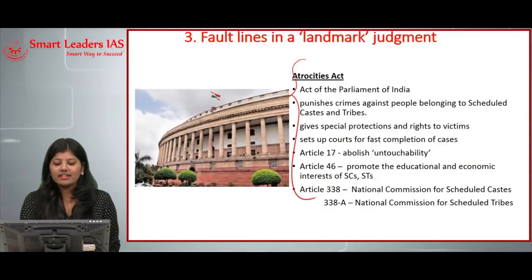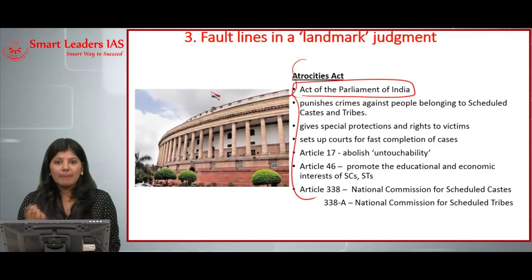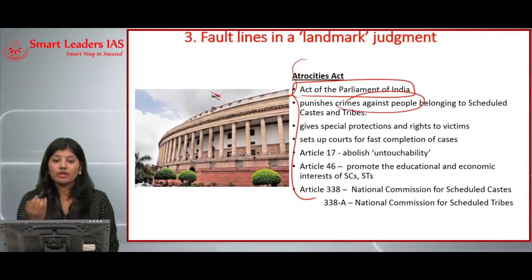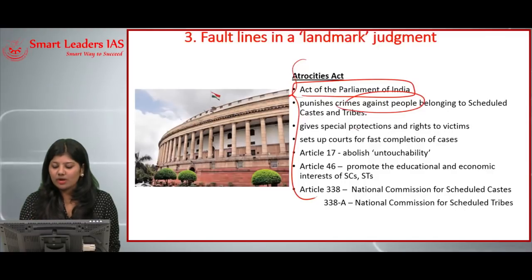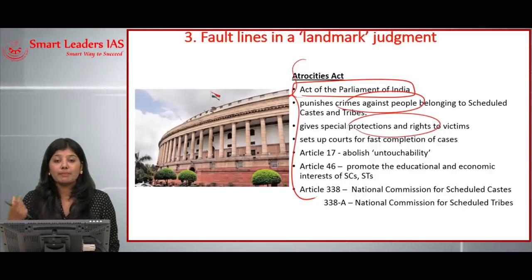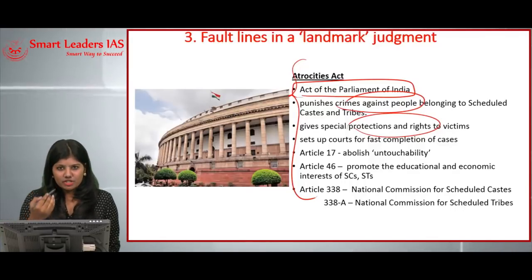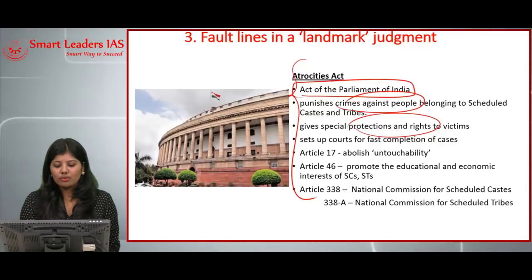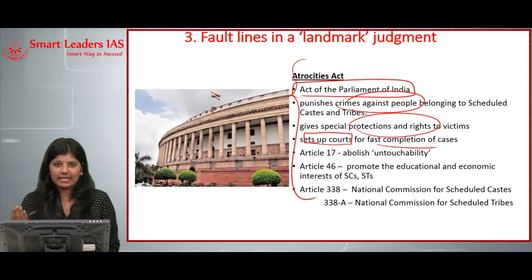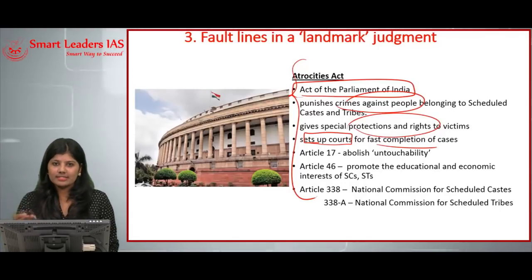The Prevention of Atrocities Act is an act of the Parliament of India. It punishes crimes against people belonging to SC/ST communities, gives special protection and rights to victims affected by suppression or violence, and enables setting up of special courts to speed up the process of getting justice for SC/ST people.